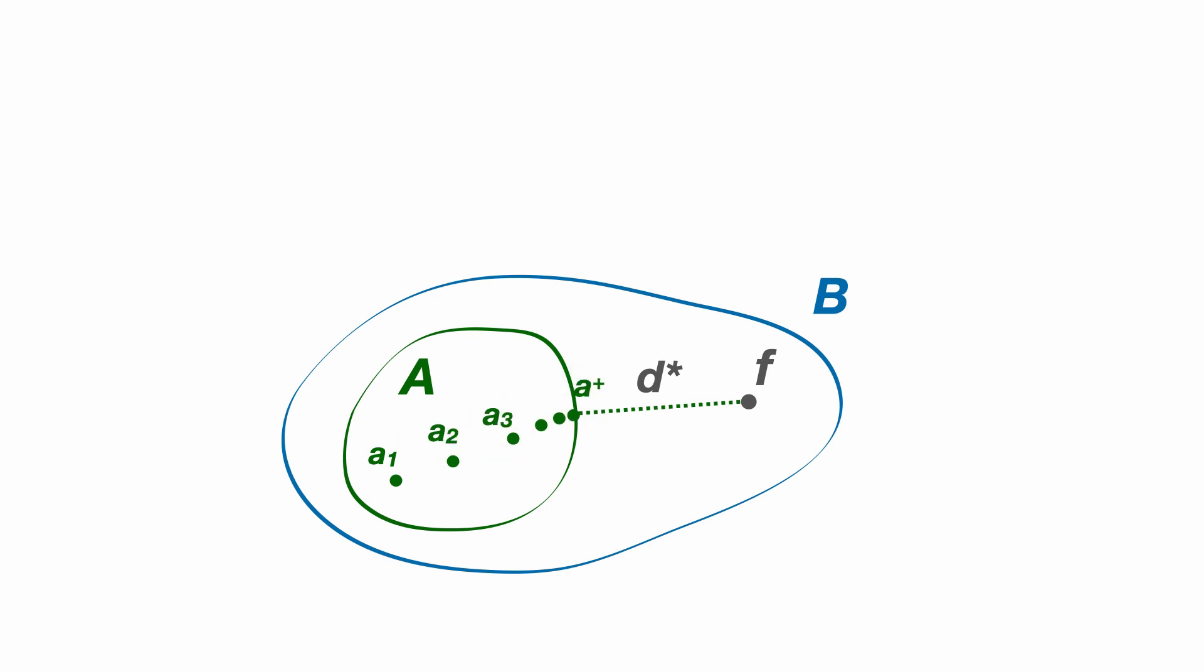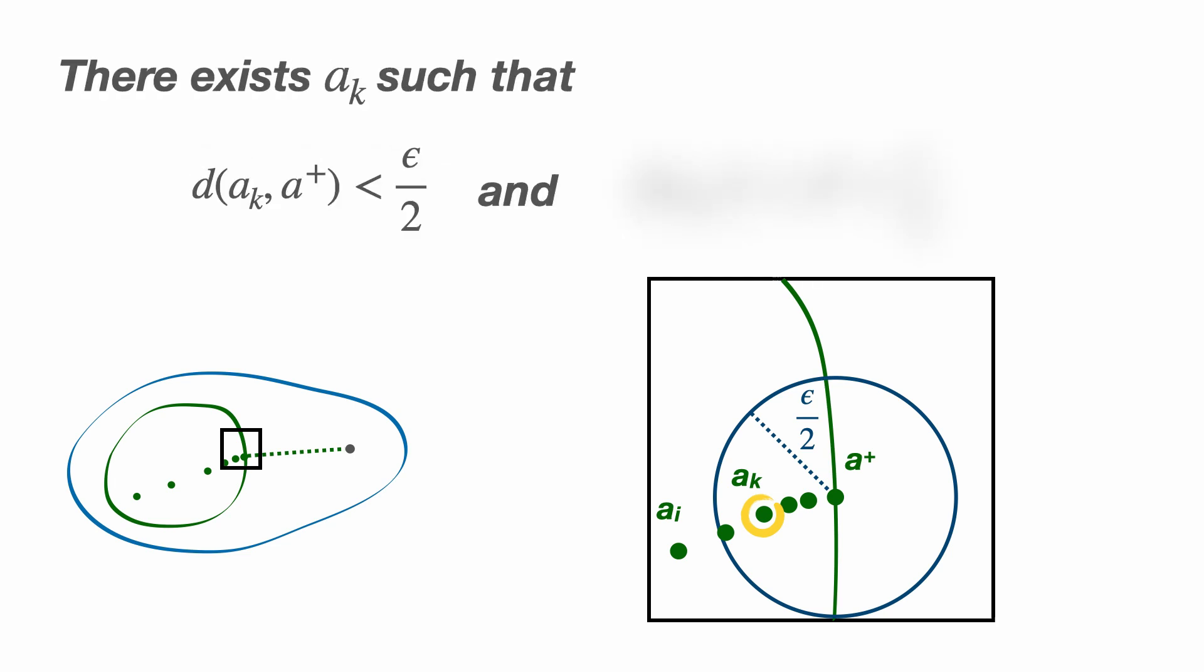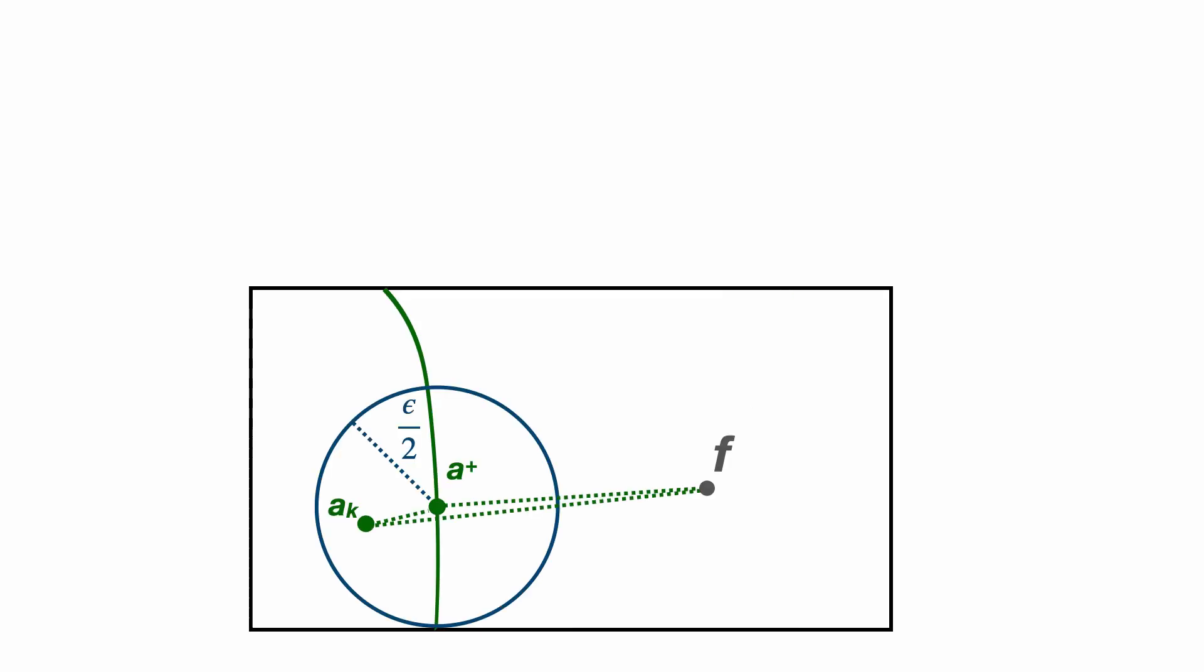Consider the area immediately around A plus. Since a sub i tends to A plus and the distance between a sub i and f tends to d star, let epsilon be a small number greater than zero. If we construct an open ball around A plus with a radius of epsilon over 2, we can guarantee that there will be some number k such that A sub k lies within this ball. This implies that there exists an element A sub k which simultaneously has a distance less than epsilon over 2 away from A plus and a distance less than d star plus epsilon over 2 away from f.